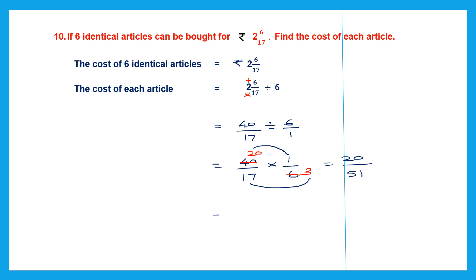So now we have found the cost. Since cost means the unit is rupees, the cost of each article is rupees 20 by 51.